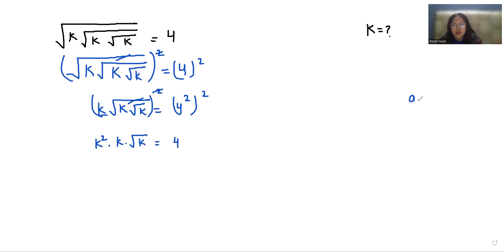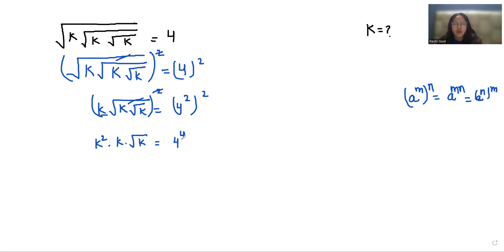According to the exponent rule, a to the power m, to the power n, equals a to the power m times n. So we can write the right-hand side as 4 to the power 4.